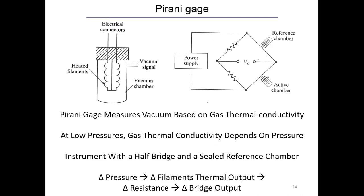One of the more modern devices is the Pirani gauge. It has a heating filament and a chamber where the vacuum is admitted. The change in pressure results in a change in resistance. Because of that, it's placed into a Wheatstone bridge: an active chamber, a reference chamber, two fixed resistors, and then we can measure output voltage with a DAC, which allows for dynamic measurements.